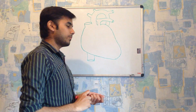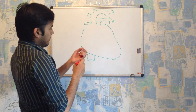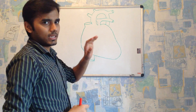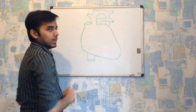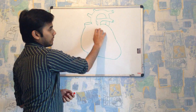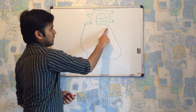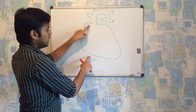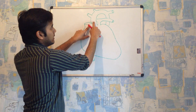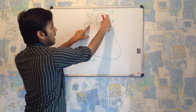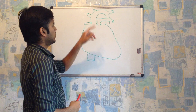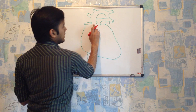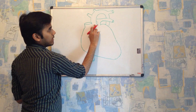Coming to the heart, we'll discuss the general basic anatomy. This is the apex of the heart, this is the base of the heart, this is the superior vena cava, this is the inferior vena cava, and this is called the arch of aorta. The arch of aorta contains three branches.